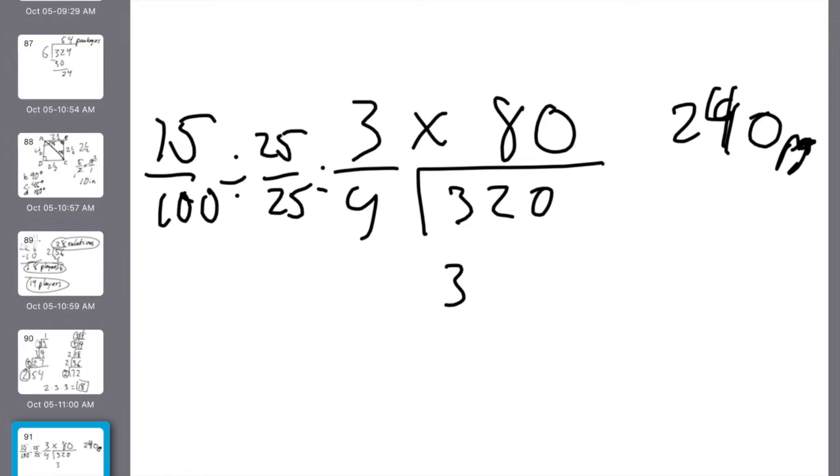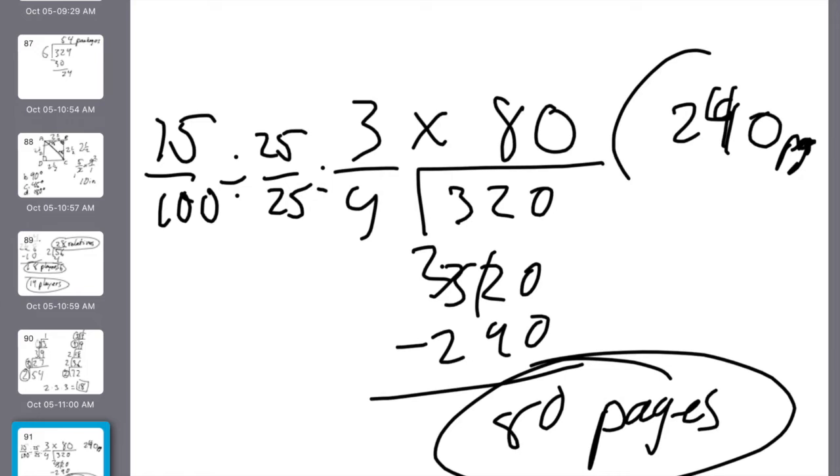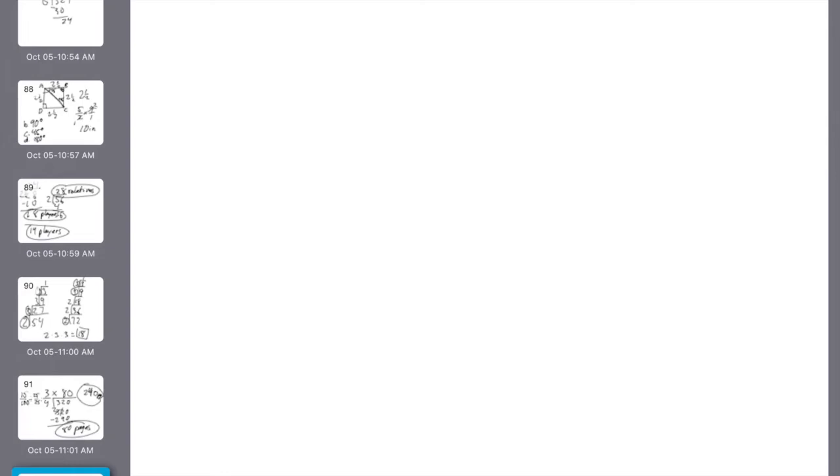B says, how many did he not read? I need to subtract. So 320 minus 240. 0, can't, 12, 8. He has 80 pages that he didn't read yet. B, A.